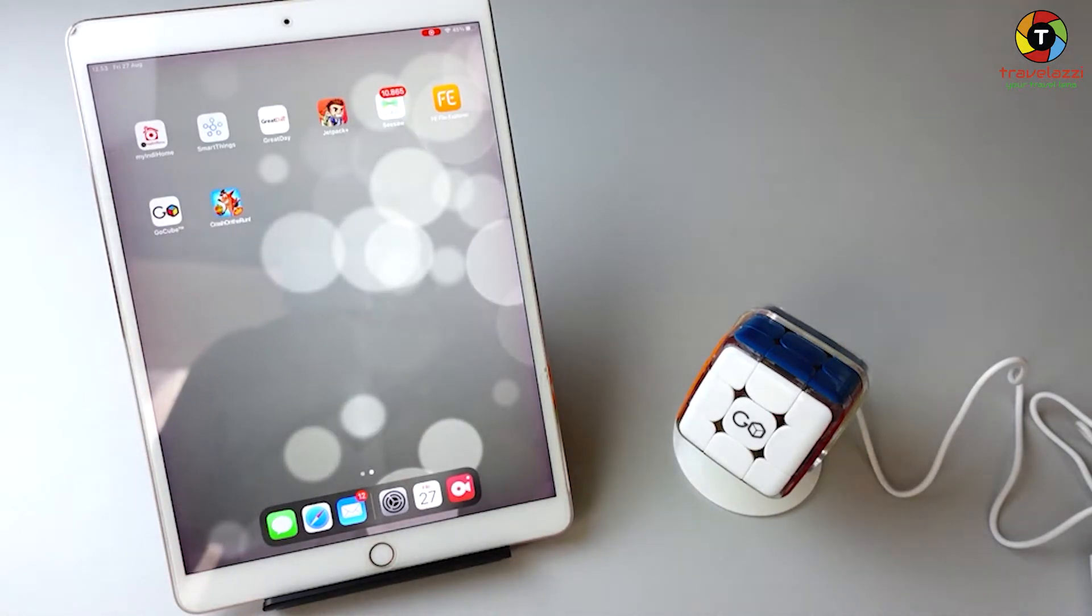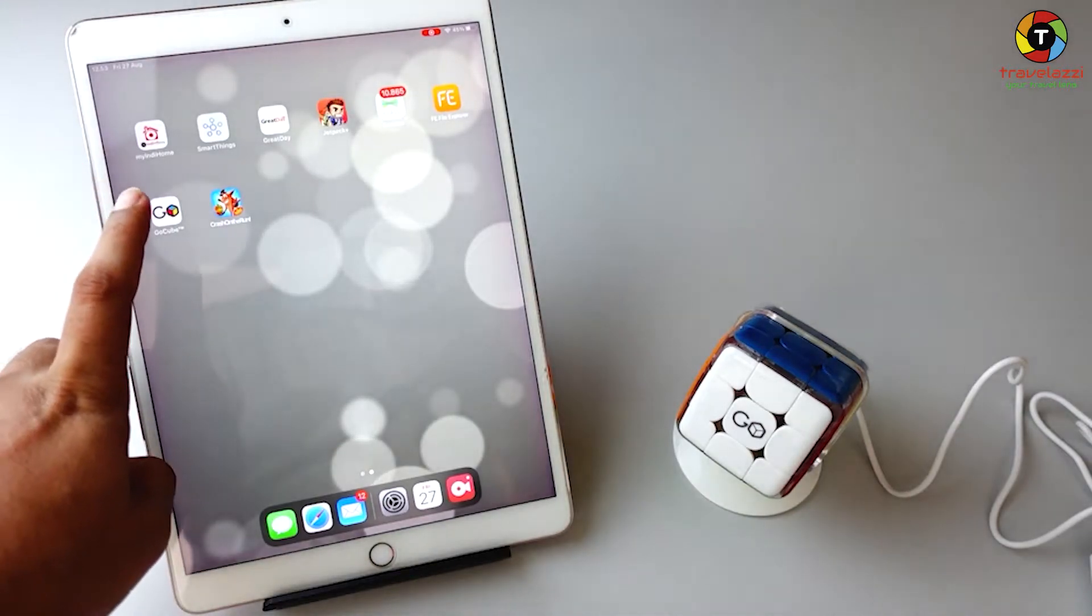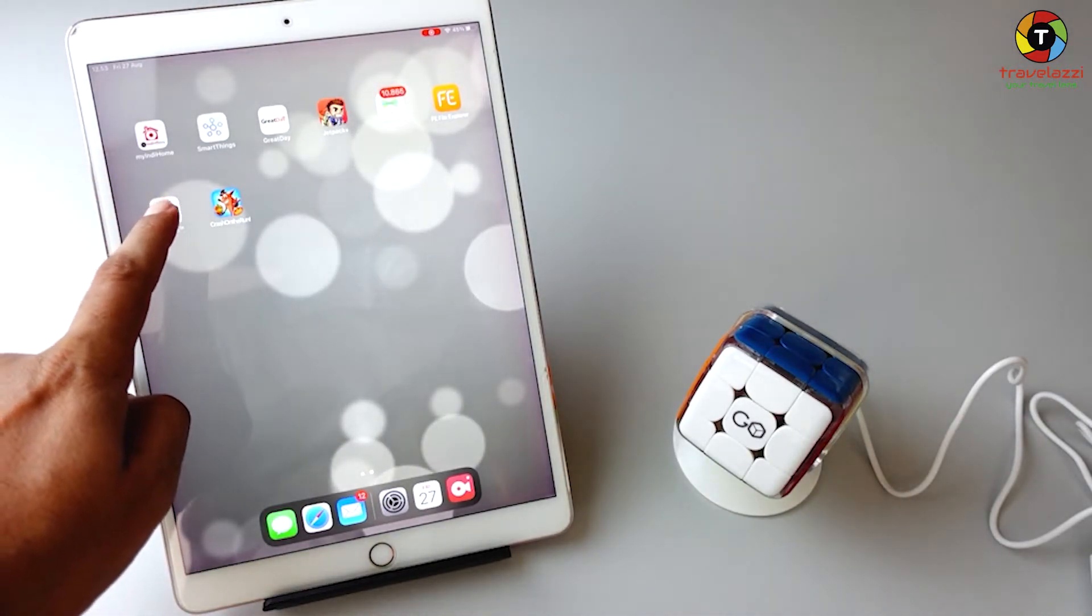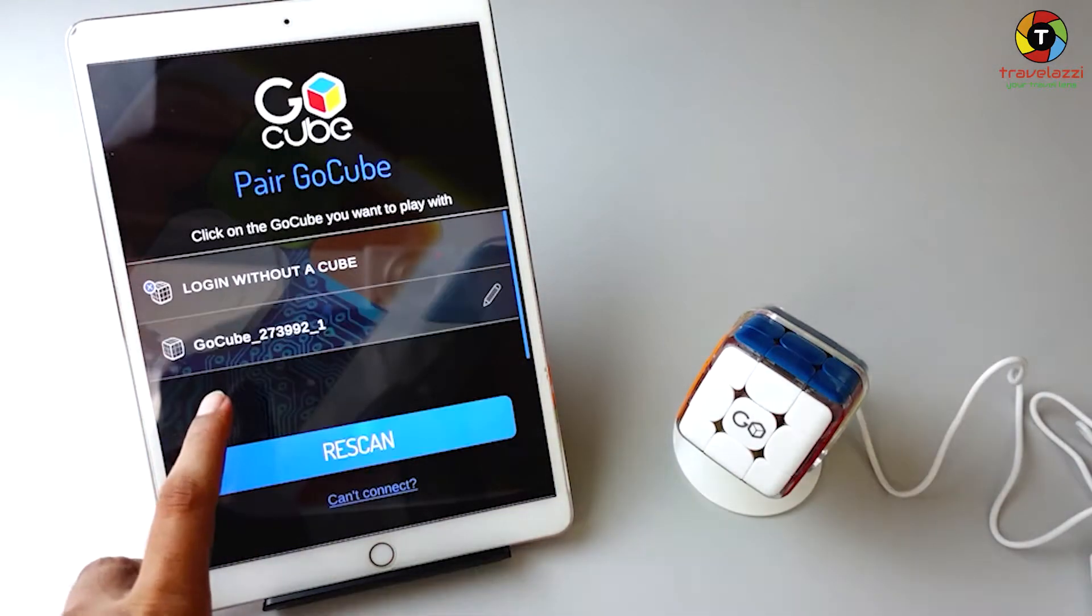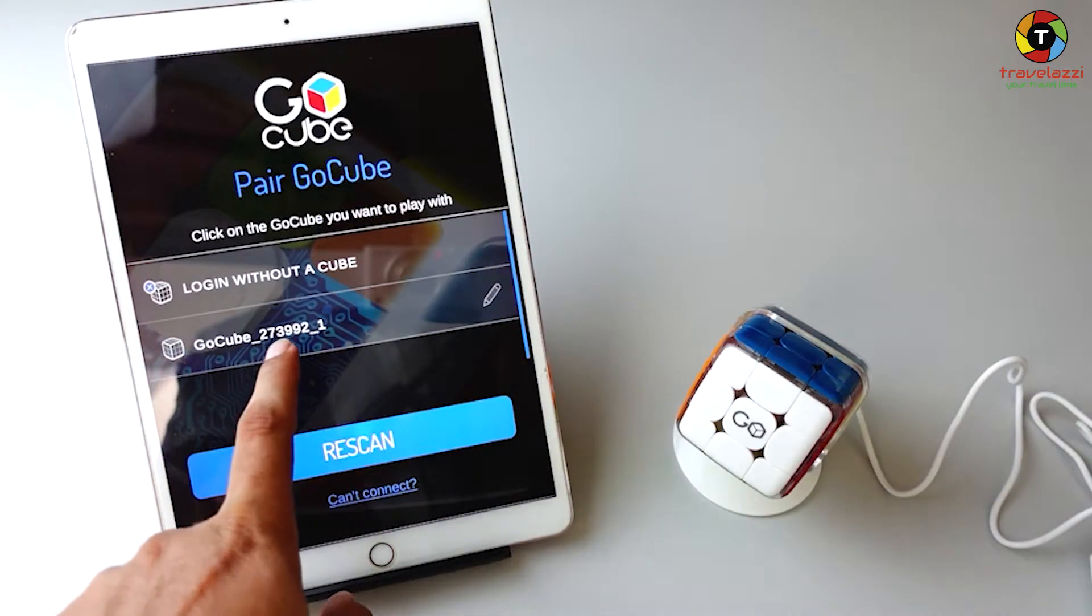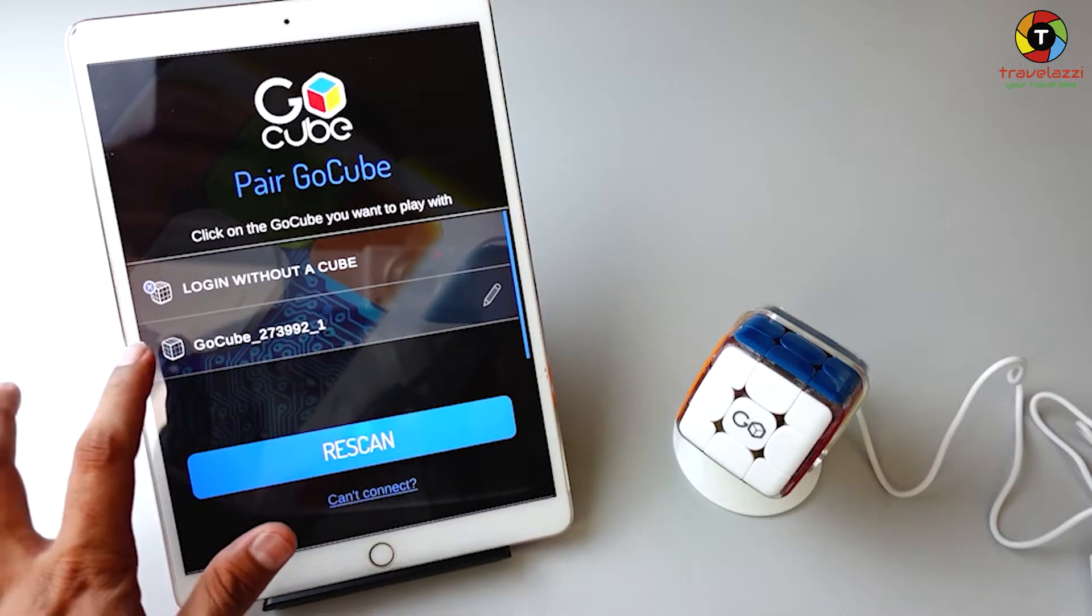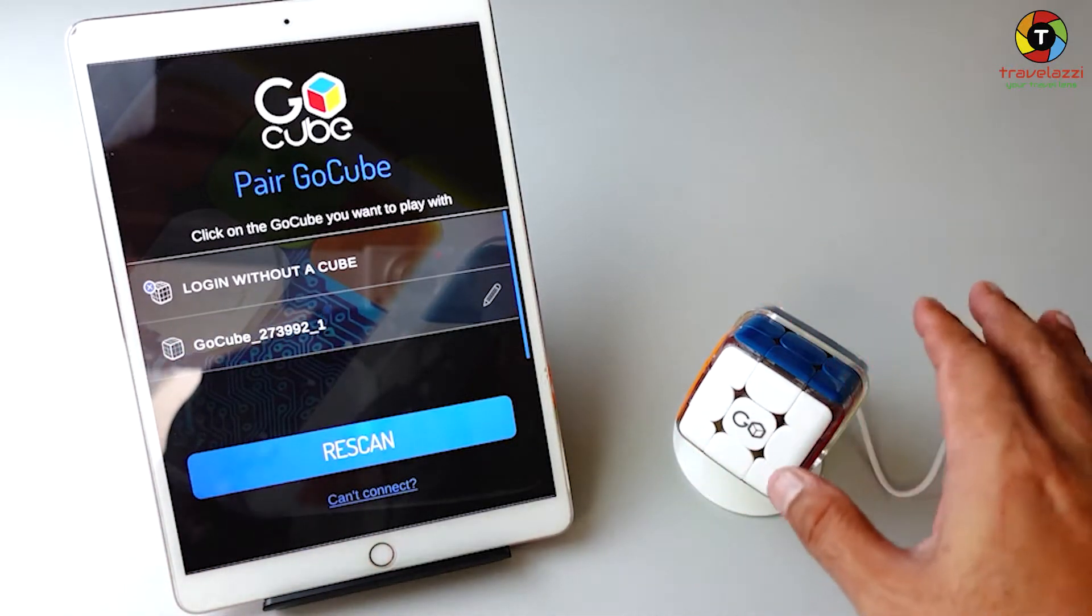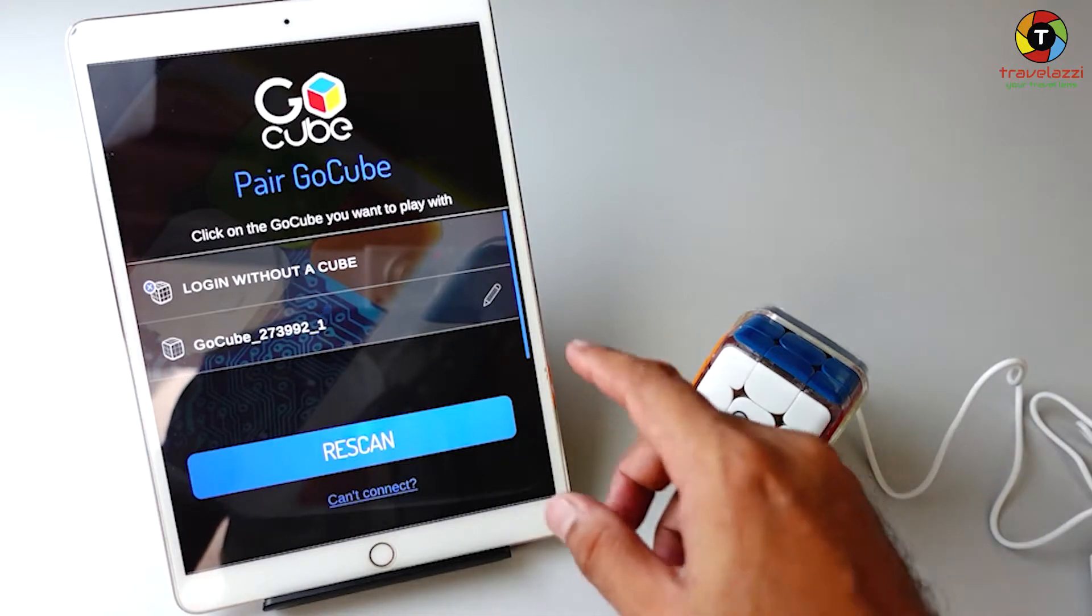If you do not have this application, please go ahead and install it. This is the first time I am going to launch the app. It will automatically find your Go Cube. For me it is 273992, so that's the Go Cube which is already connected with power, and it gives you the option to change the name.